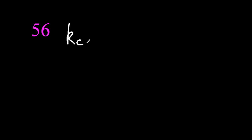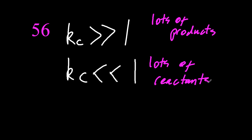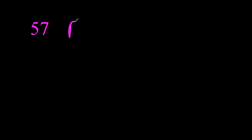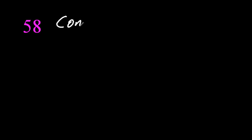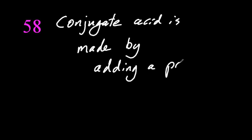56, KC is really, really big. That means there's lots of products. The reaction is favoring the products, and KC is really, really small. Lots of reactants. Bronsted-Lowry acid donates a proton to a Bronsted-Lowry base, and a Lewis base donates a pair of electrons to a Lewis acid. 58, I remember conjugate acid is made by adding a proton. That's how I remember it. That's probably a better way though.